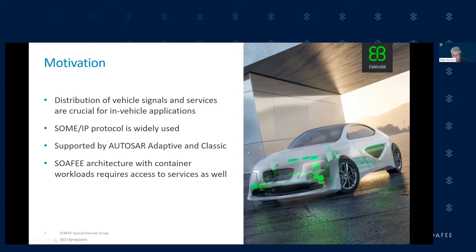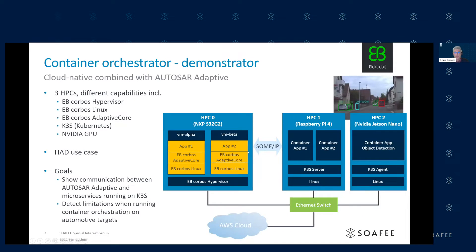In order to check how that can be combined, we created a demonstrator. That demonstrator should be as close as possible to the automotive world, and for that reason we chose automotive hardware. Here you can see it's an NXP S32G, a very typical automotive hardware with several performance cores and real-time cores.